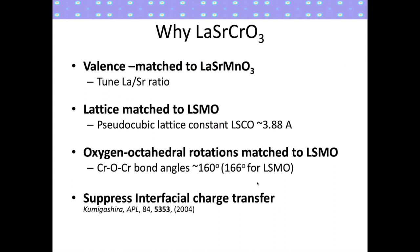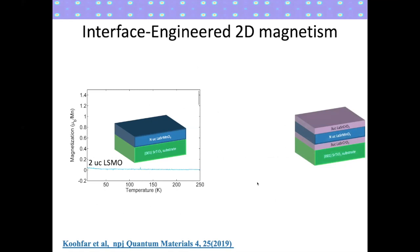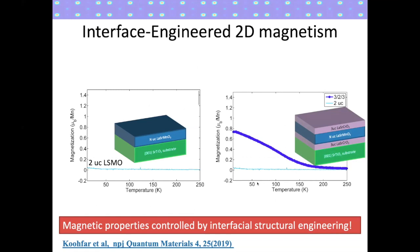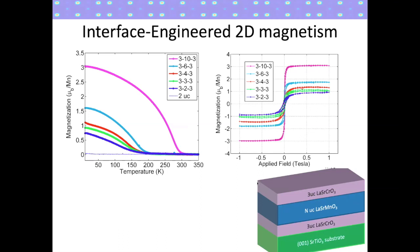One issue with using certain transition metal ions is that you end up with a very large charge transfer to the manganese, which dopes the LSMO away from the intended composition. We find that chromium works very well because it suppresses interfacial charge transfer. For two unit cells of LSMO by itself there is no magnetization, but when we add the chromate to the top and bottom interfaces, SQUID measurements show a finite magnetization — implying that by inserting these spacer layers, we've been able to engineer ferromagnetism back into the system. The net magnetization and TC go up to room temperature as we increase the LSMO thickness.